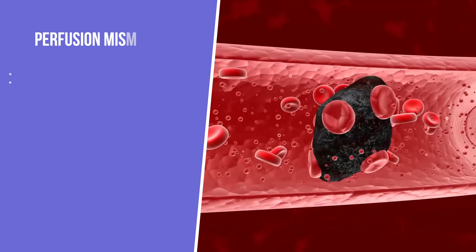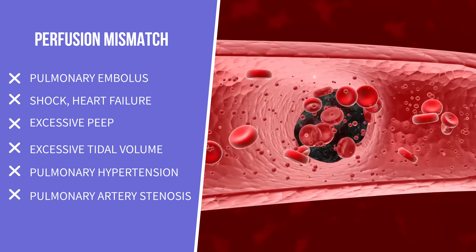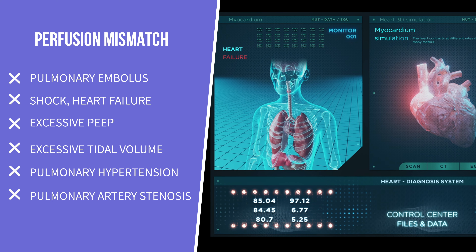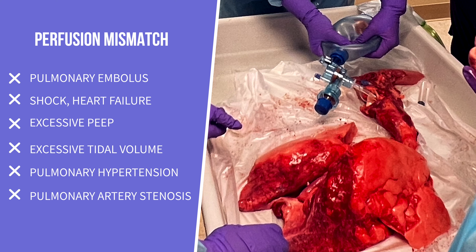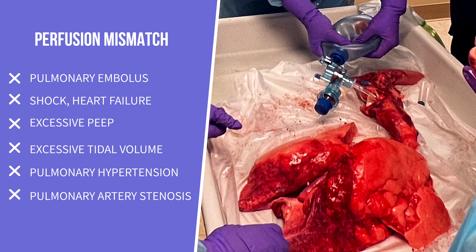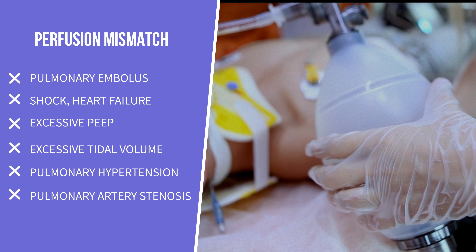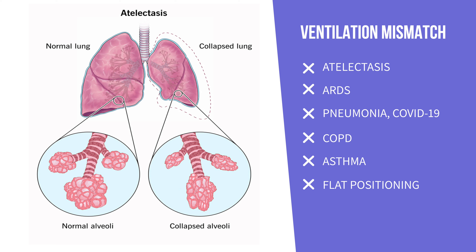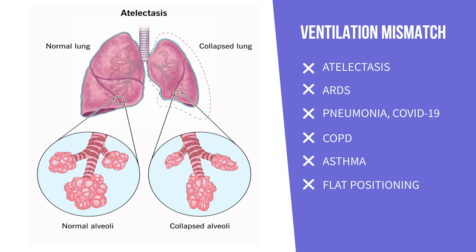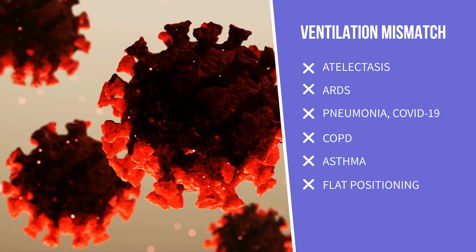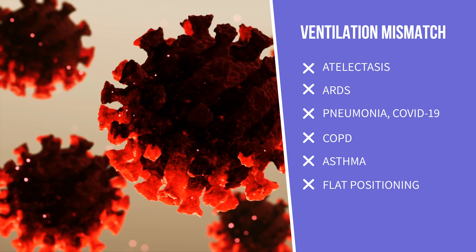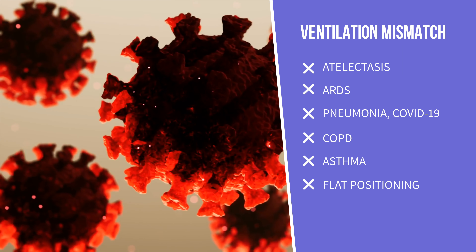Mismatches occur due to various causes. For example, a pulmonary embolus, shock, too much positive end-expiratory pressure, and excessive tidal volumes could result in problems with perfusion. Atelectasis, acute respiratory distress syndrome, and pneumonia will impact ventilation, causing a well-perfused but poorly oxygenated lung.